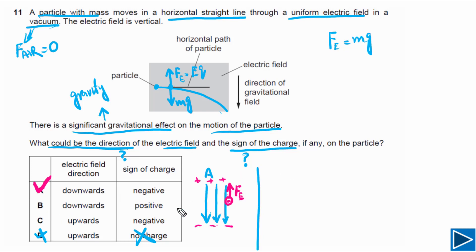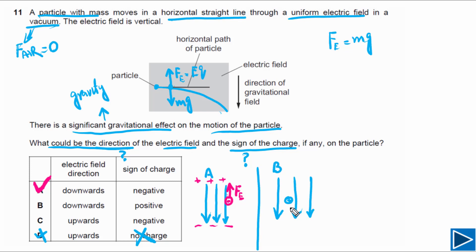For option B, the electric field is still acting downward and the charge is positive. A positive charge moves in the direction of the electric field, so it will experience electric force in the downward direction. This is not a possible answer because the electric force must point upward to balance gravity.